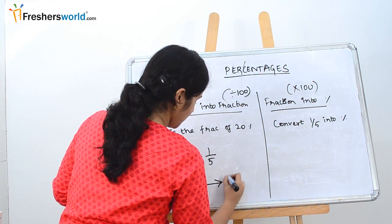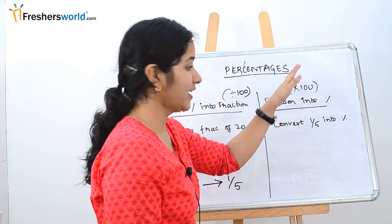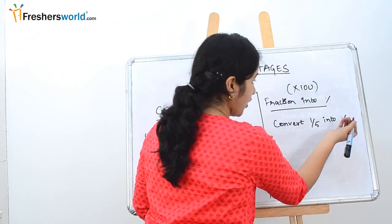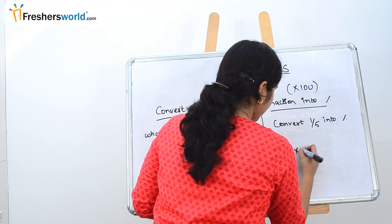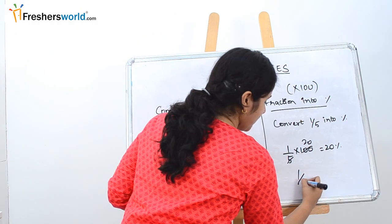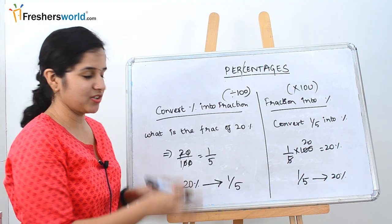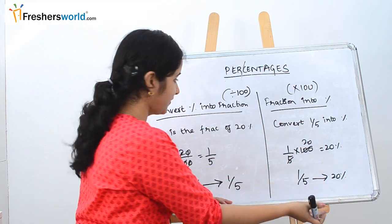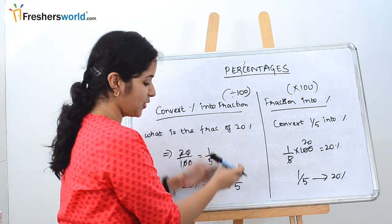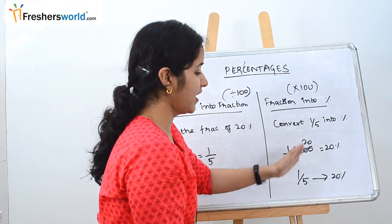So 20 percent has been converted into 1 by 5. Now for fraction into percentage, we multiply by 100. So to convert 1 by 5 into a percentage: 1 by 5 multiplied by 100, which is nothing but 20 percent. We've taken the same values in both cases — this is just the vice versa. Percentage to fraction: 20 percent becomes 1 by 5. Fraction to percentage: 1 by 5 becomes 20 percent.